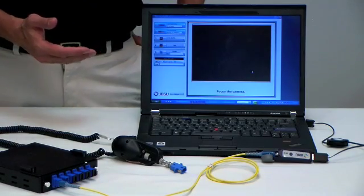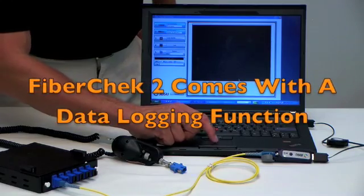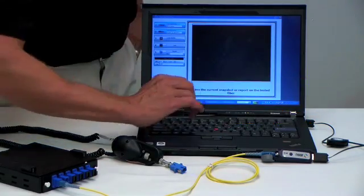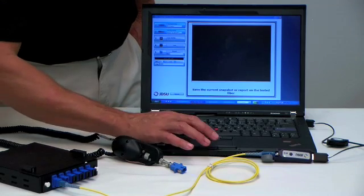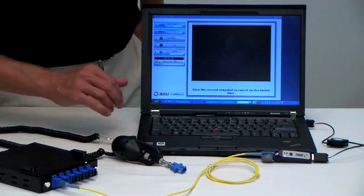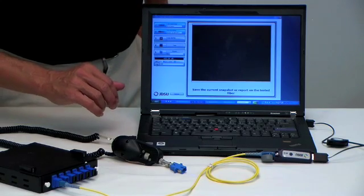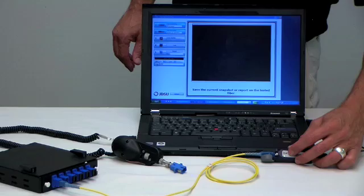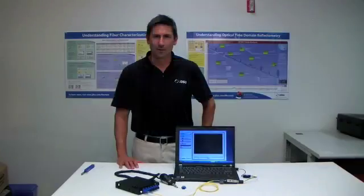Because this measurement is taken on a laptop, we have a data logging function with a comments field. We simply type in comments, hit the log button, and the data is saved. Another way to save data is to press the button on the MP60.